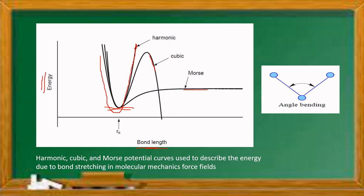When there are deviations from the harmonic equation — anharmonicity — corrections are given in force fields like MM3, MM4, and MMFF, which try to reproduce bond lengths for small organic molecules with high precision. Apart from the main potential energy equation, some corrections are applied in force fields like MM3 and MM4, developed by Allinger and co-workers, in order to reproduce bond lengths of organic molecules.